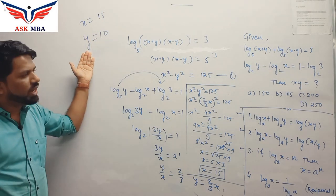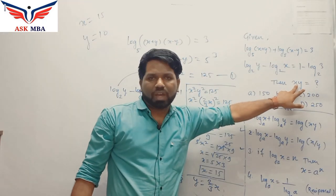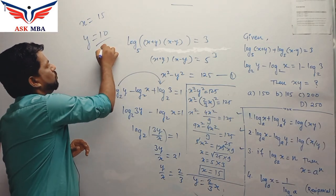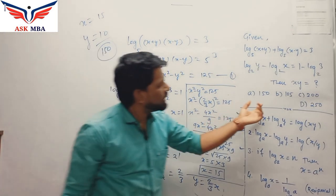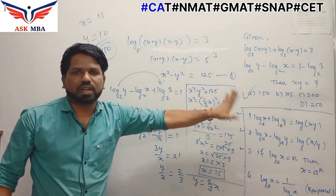So getting the values of x and y, let's see what we have to find out. We need to find out x into y, that will be 15 into 10 is 150. So in that case, you will have first option as the correct answer.